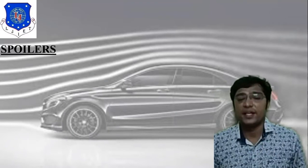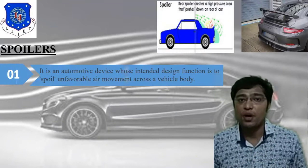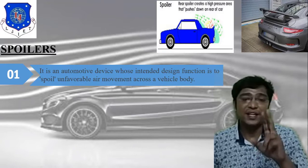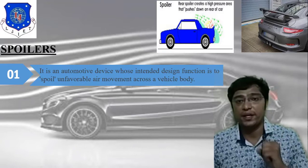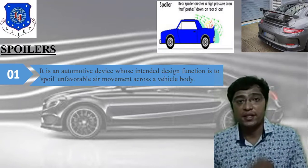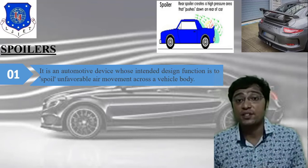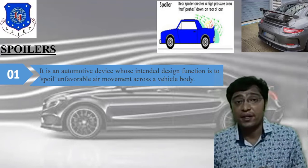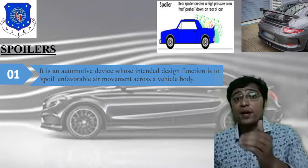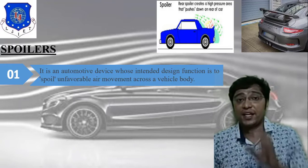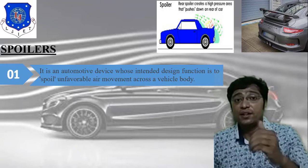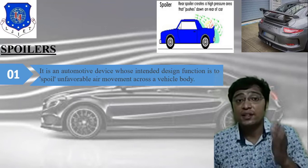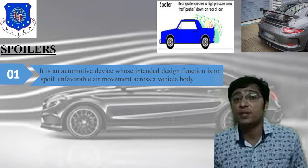First — what is a spoiler? There are two images attached related to the spoiler. In the rear part of the car body you can see the spoiler. Here you can see the square rod at the rear — that is called a spoiler. It creates a high pressure area that pushes down on the rear of the car.